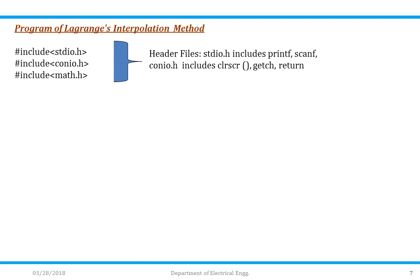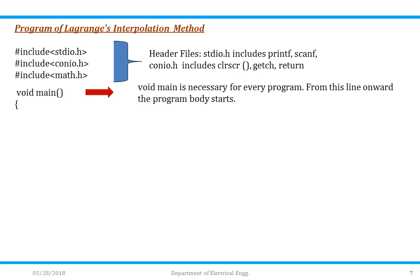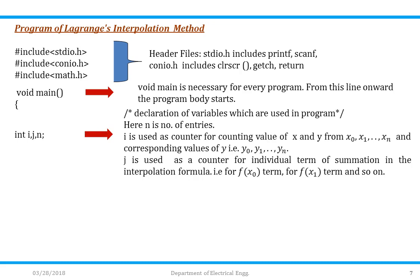Program of Lagrange's interpolation method. The first step is header files: stdio.h is the standard input/output which includes printf and scanf; conio.h is console input/output which includes clrscr, getch, and return. Void main is necessary for every program — from this line onwards, the program body starts. Initialize all variables: int i, j, and n — declaration of variables used in the program. Here n is the number of entries, i is a counter for x and y values from x0 to xn, and j is a counter for each individual term of summation in the interpolation formula.